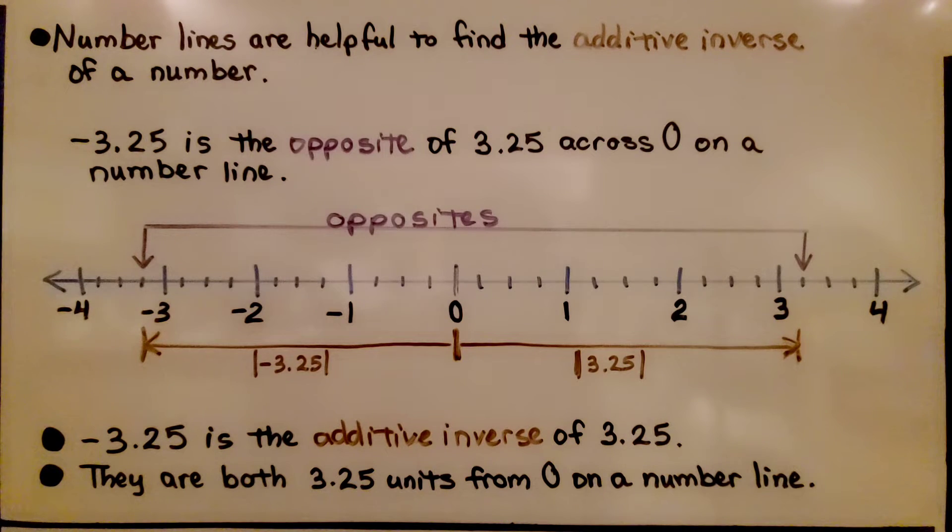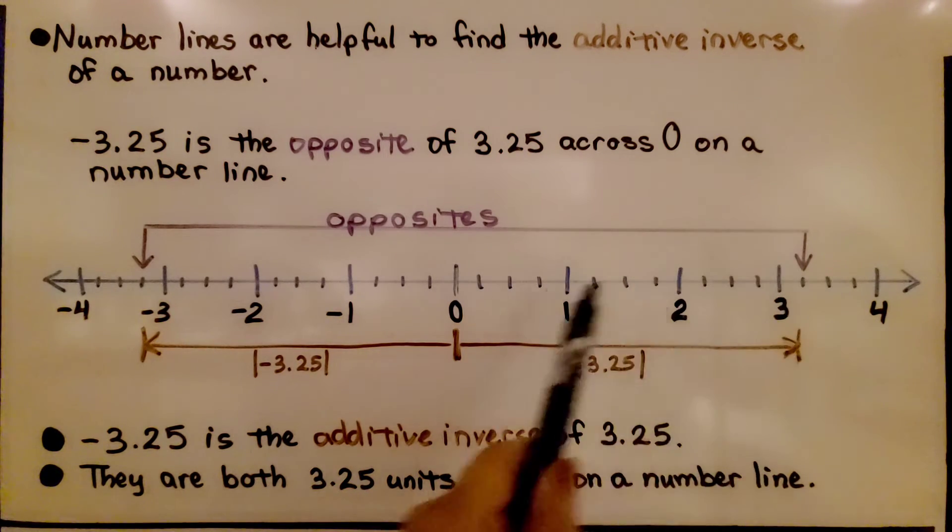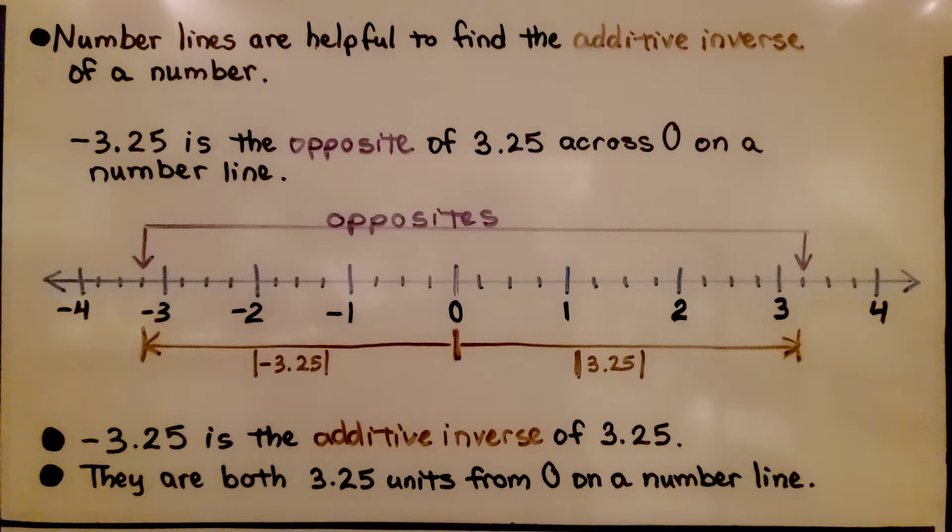Number lines are helpful to find the additive inverse of a number. Negative 3.25 is the opposite of positive 3.25 across zero on a number line. They're both 3.25 units from zero. We can use the absolute value of each to see that they are 3.25 distance from zero on the number line.